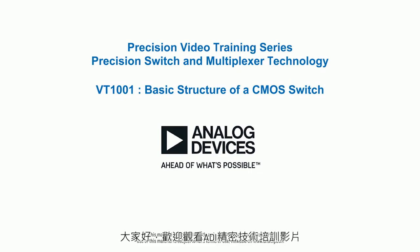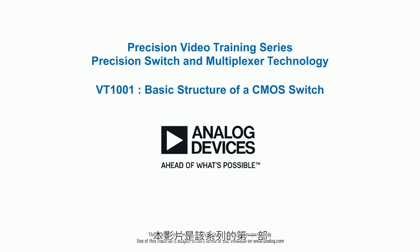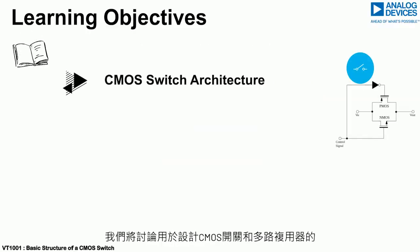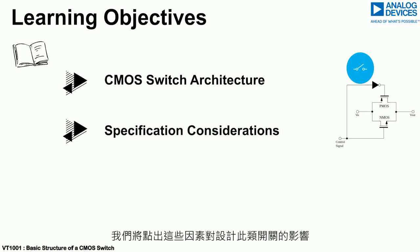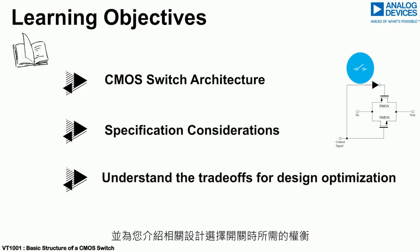Hello and welcome to the Analog Devices Precision Training video which focuses on switch and multiplexer technology. This video is the first in the series. We will discuss the basic architecture and key specifications used to design CMOS switches and multiplexers, highlight the impact of these when designing such a switch, and go through the associated trade-offs that must be considered when choosing for your design.